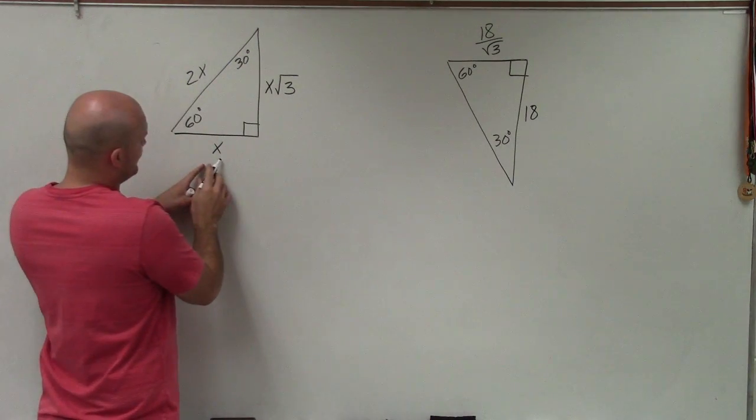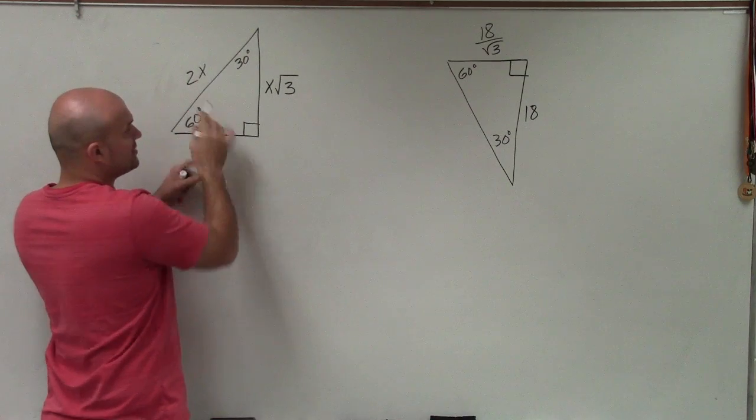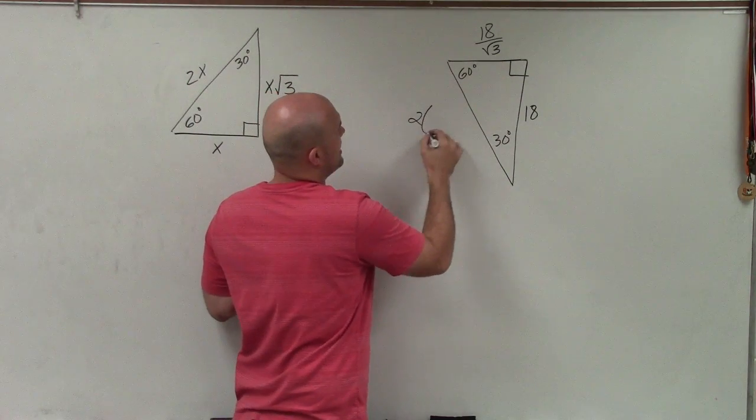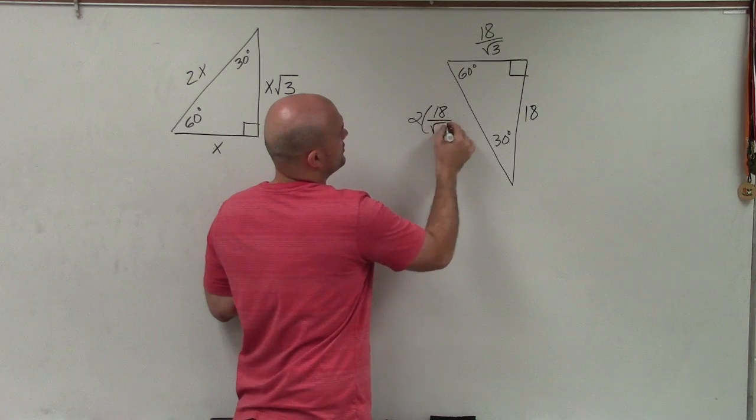Then, once I'm given the short leg, all I need to do to get the hypotenuse is multiply that by 2. So I have 2 times 18 over the square root of 3.